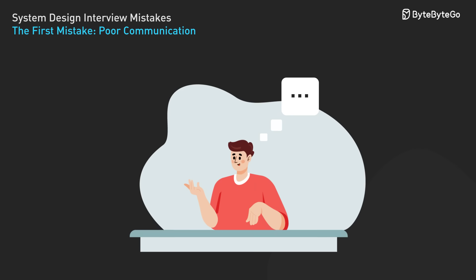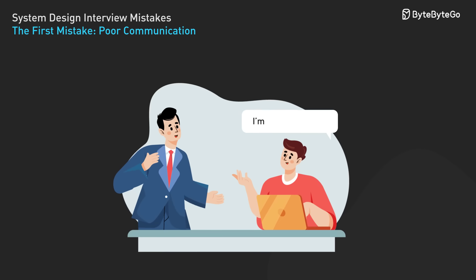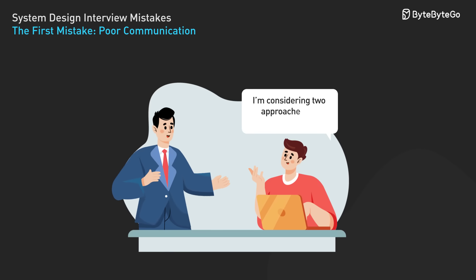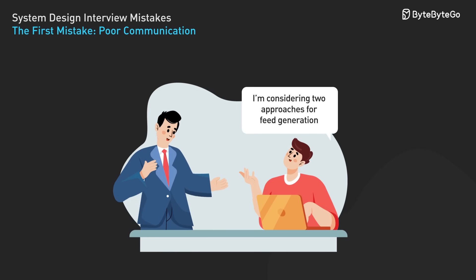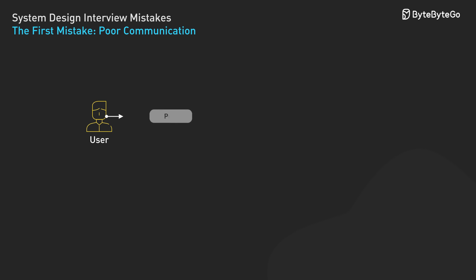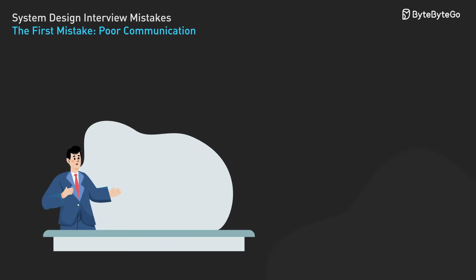The fix: think out loud. Narrate your thought process. Consider two approaches for feed generation: push-based pre-computes feeds when users post, and pull-based computes feeds on requests. Discuss your reasoning openly.